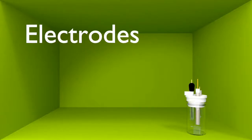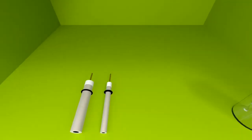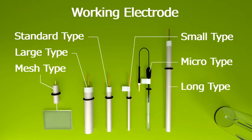ALS provides electrodes for the basic three-electrode electrochemical measurement method. For the working electrode, a variety are available and you can choose according to your application purpose.